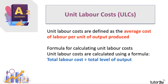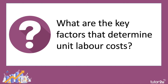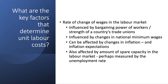Unit labour costs will tend to rise when total labour costs are increasing faster than output. There are two key factors that determine unit labour costs. The first is the rate of change of wages in a country's labour market — how fast pay is increasing from year to year. In China, for example, average wages have been rising by upwards of 10% per year. In other countries wages don't increase as quickly.